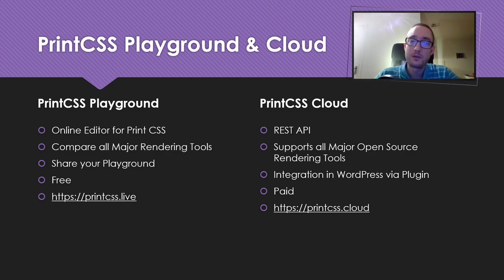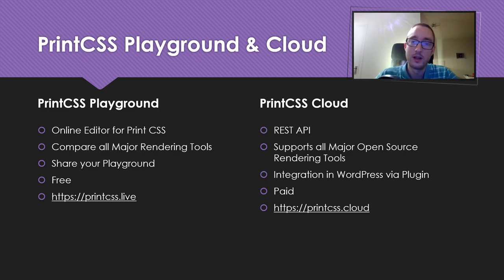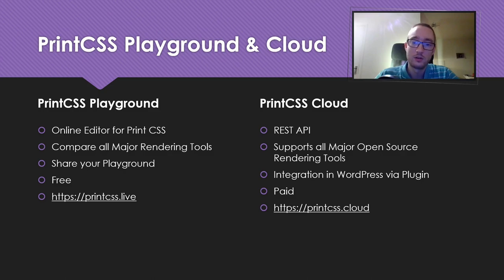The website is completely free and you find it under printcss.live. The other website is Print CSS Cloud — it's a REST API which I offer via Rapid API. It supports all the major open source rendering tools, which are PageJS, WeasyPrint, and weasyprint. I also have a WordPress integration out of the box via plugin. It's a paid REST API starting at $14 a month, and you find it under printcss.cloud.